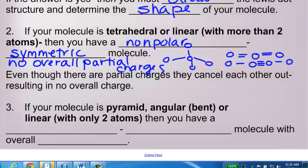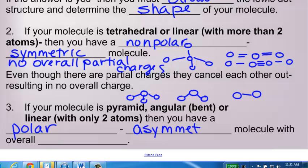However, if your molecule is pyramid, which is your central atom with three bonds, or it's angular, which we call bent, which is your central atom with two bonds, or if it's linear with only two atoms, like this, then you will have a polar asymmetrical molecule with overall charges.